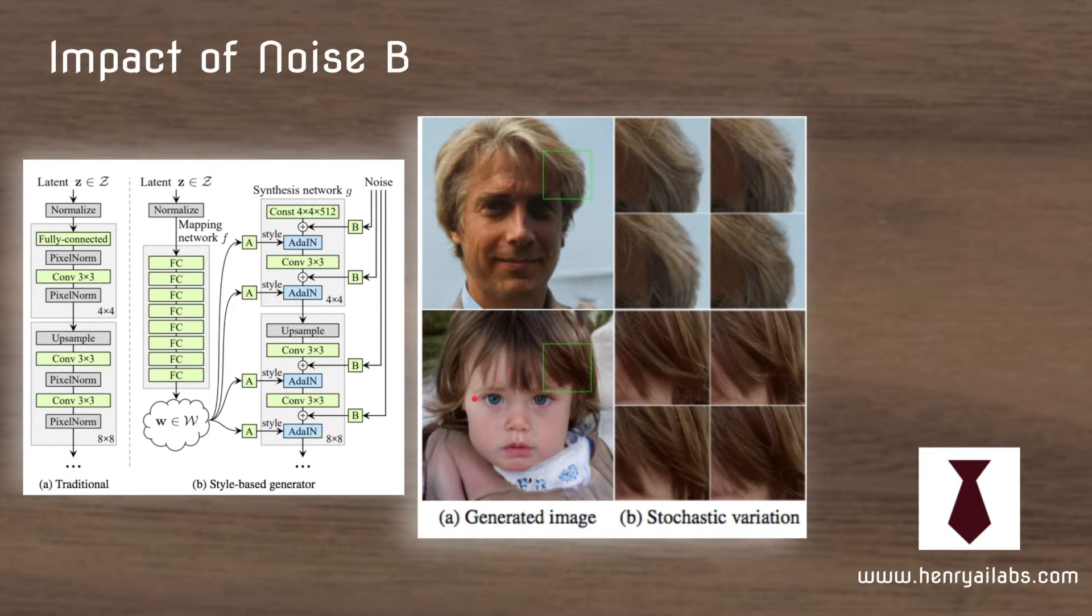So then one other way that they add variance to the generated images is through these noise concatenations and these result in these really interesting like localized structures.